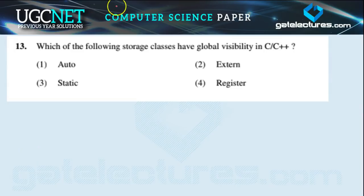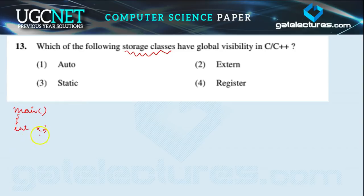Let us start with question number 13: which of the following storage classes have global visibility in C or C++? First, let's talk about storage classes. When you define any variable in C or C++, the storage class tells you the scope and the lifetime of that variable within a C program.